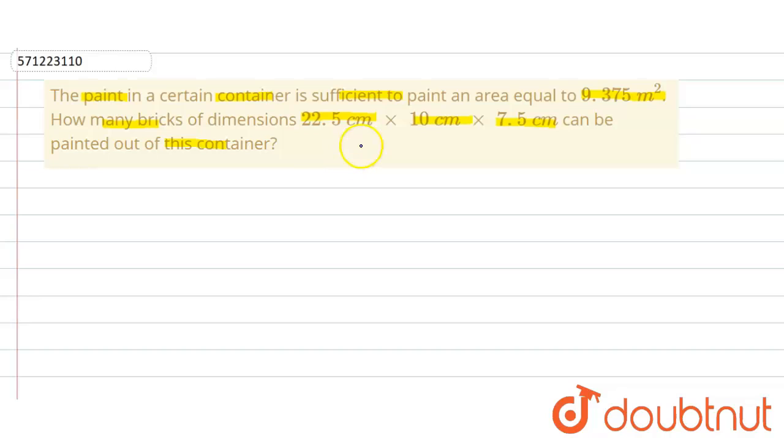First, we have to find out the total surface area of the brick, which is in the form of a cuboid.